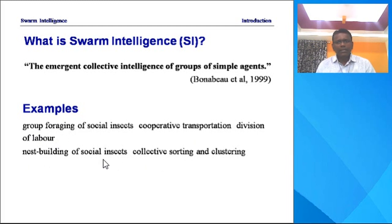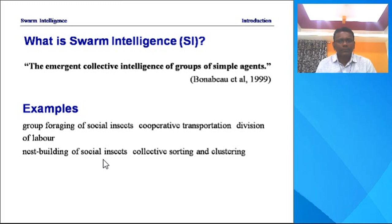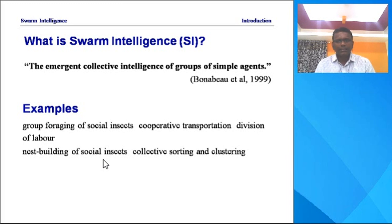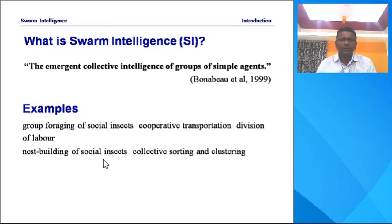One very important application of Swarm Intelligence as well as evolutionary computing is optimization. We use these techniques for optimization. Obviously, searching, heuristic searching, and sorting are other applications of evolutionary computing, but optimization is the very important and prime objective of Swarm Intelligence. We are trying to understand and learn how we can achieve the optimized solution by studying group foraging of social insects and nest building of social insects.